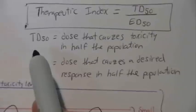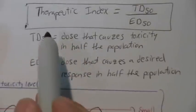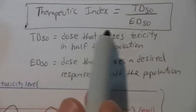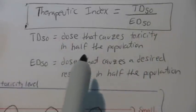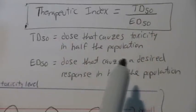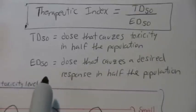Well, not quite. It depends on the therapeutic index of the drug in question. So the therapeutic index is a ratio between the dose that causes toxicity in half of the population over the dose that produces a desirable therapeutic effect in half of the population.